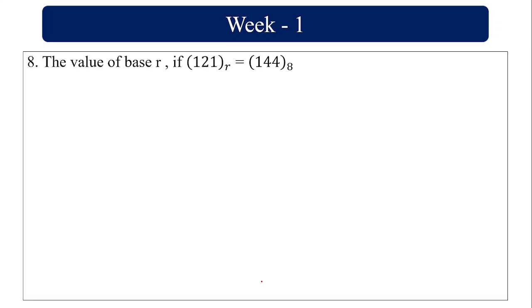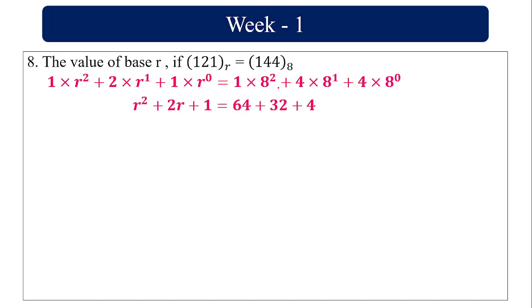Find base R if 121 base R equals 144 base 8. Expanding by position: 1×R⁰ + 2×R¹ + 1×R² = 4×8⁰ + 4×8¹ + 1×8². This gives R² + 2R + 1 = 4 + 32 + 64 = 100. Recognizing the left side as (R+1)², and 100 = 10², we get R + 1 = 10, so R equals 9.